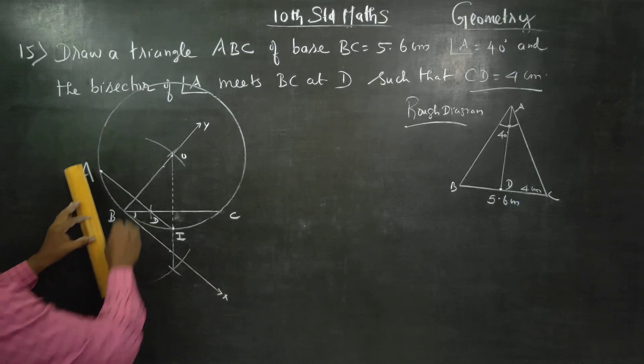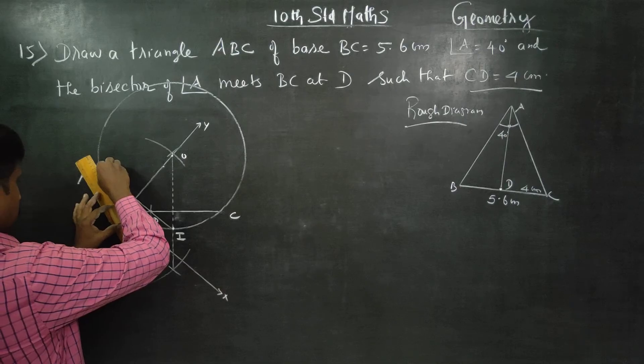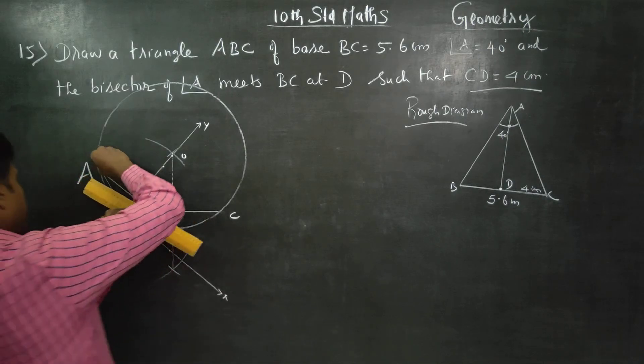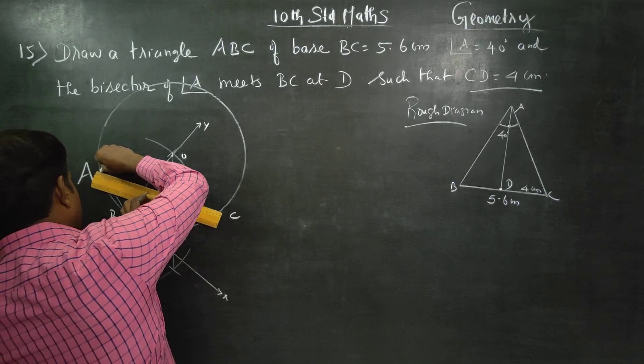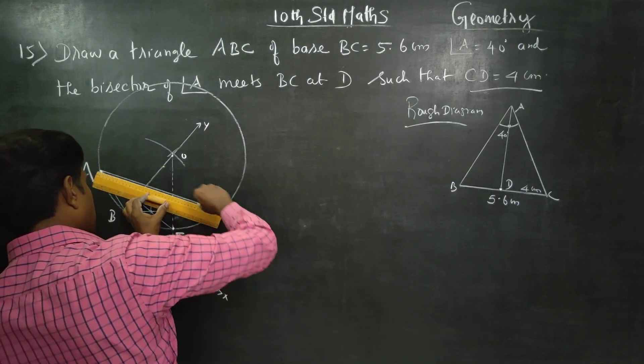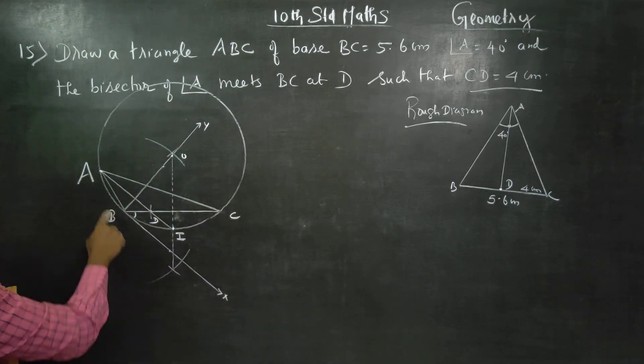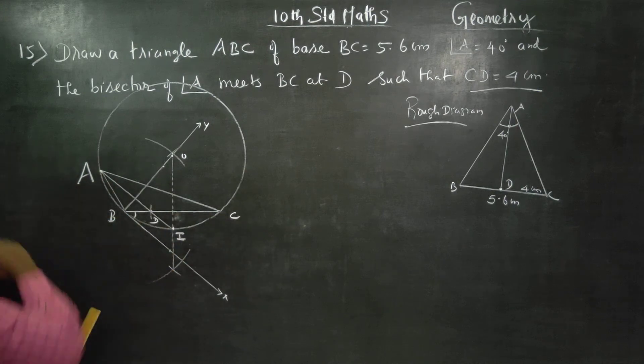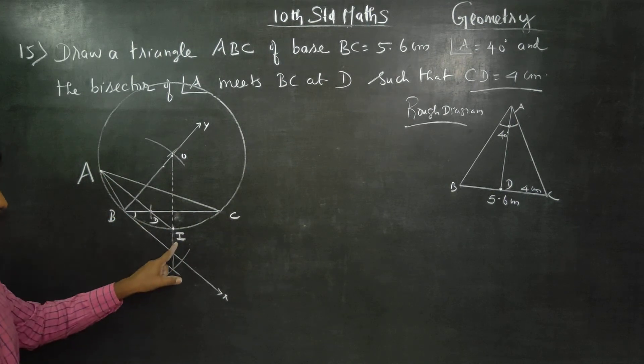This is A. Now join. Join. You will be getting the triangle A, B, C.